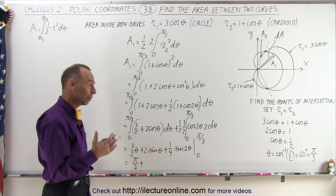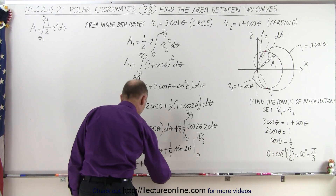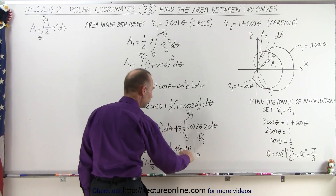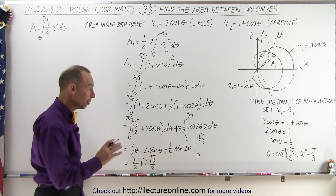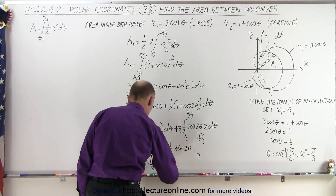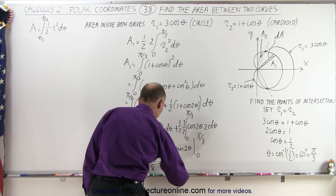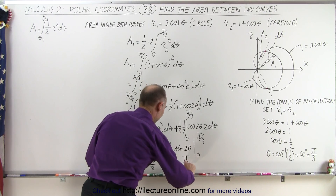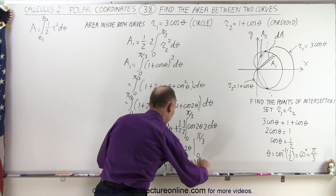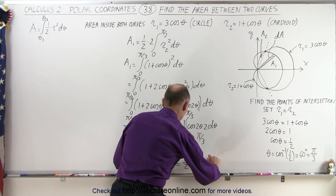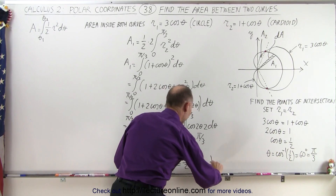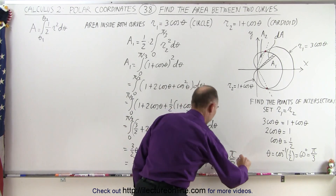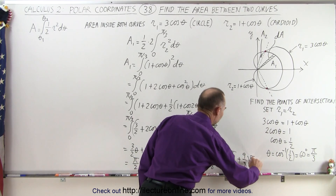The sine of pi over 3 is √3/2, so 2 times √3/2 — the 2's cancel. Then plugging the upper limit into the last term: sine of 2 times pi over 3 is sine of 2pi/3, which is also √3/2, giving plus 1/4 times √3/2. Simplifying: pi/2 plus √3 plus (1/8)√3, which combines to pi/2 plus (9/8)√3. This is the area A1, covering both the top and bottom halves.